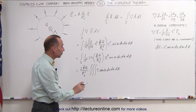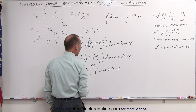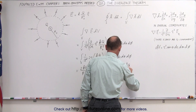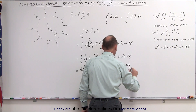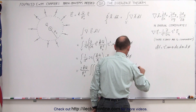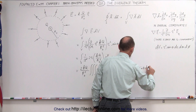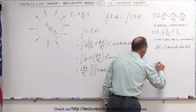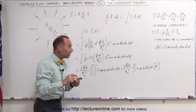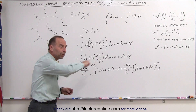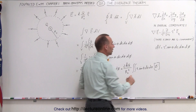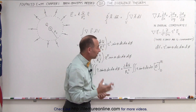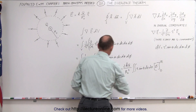We start by integrating over dφ first. Integrating dφ from 0 to 2π gives us φ evaluated from 0 to 2π. Plugging in the lower limit gives zero; plugging in the upper limit gives 2π. We can then multiply by 2π, giving us 4π times KQ over R sub naught squared times the remaining double integral of R sine θ dθ dR.